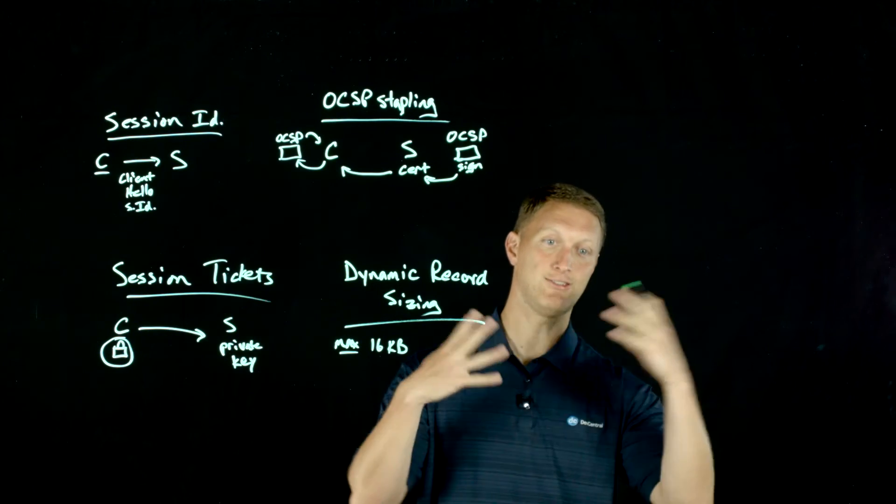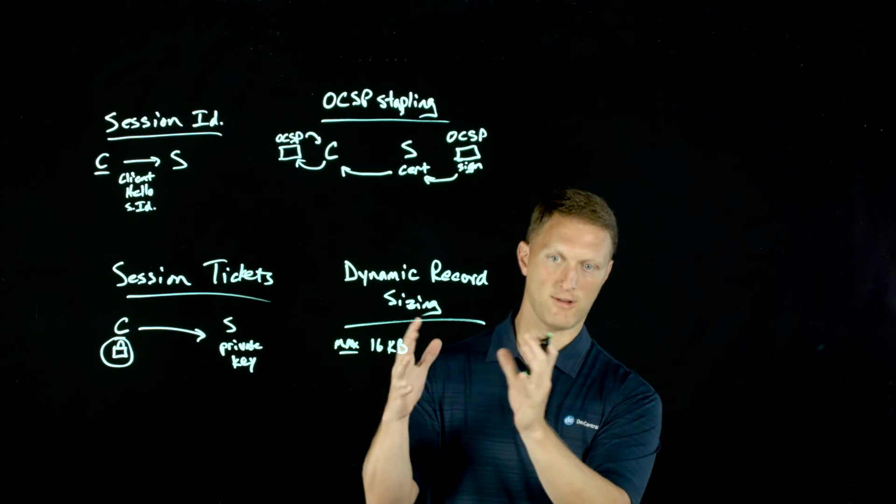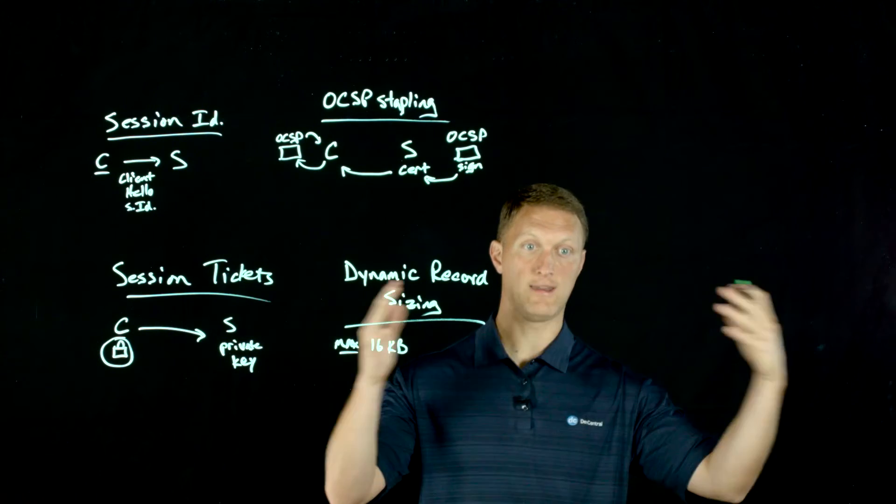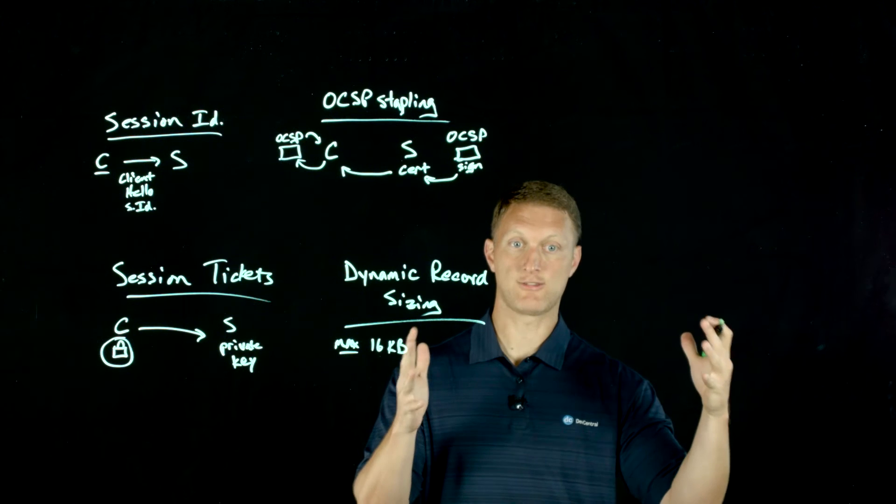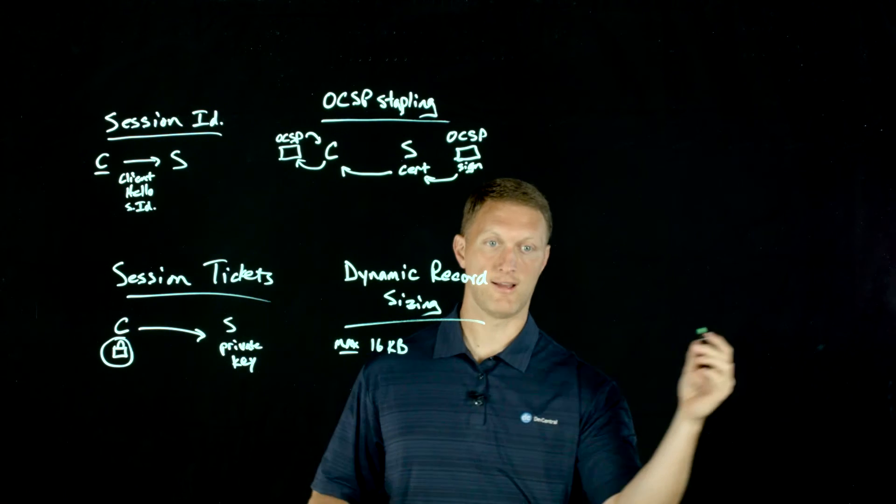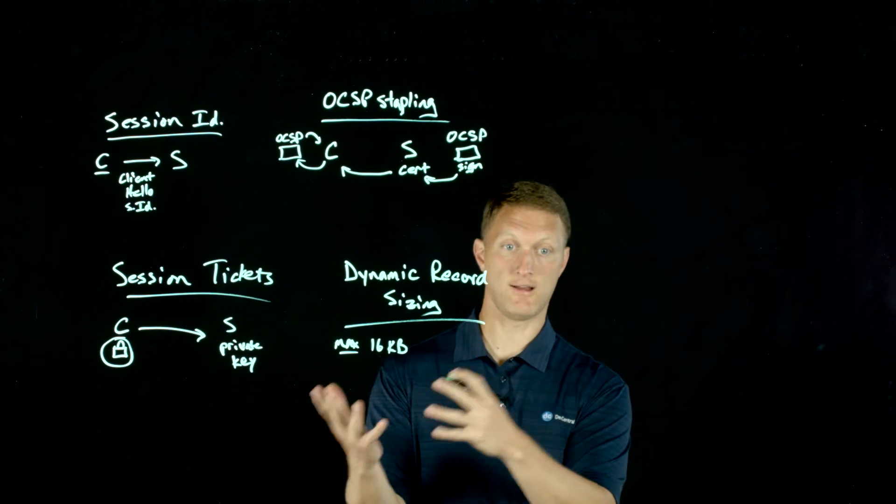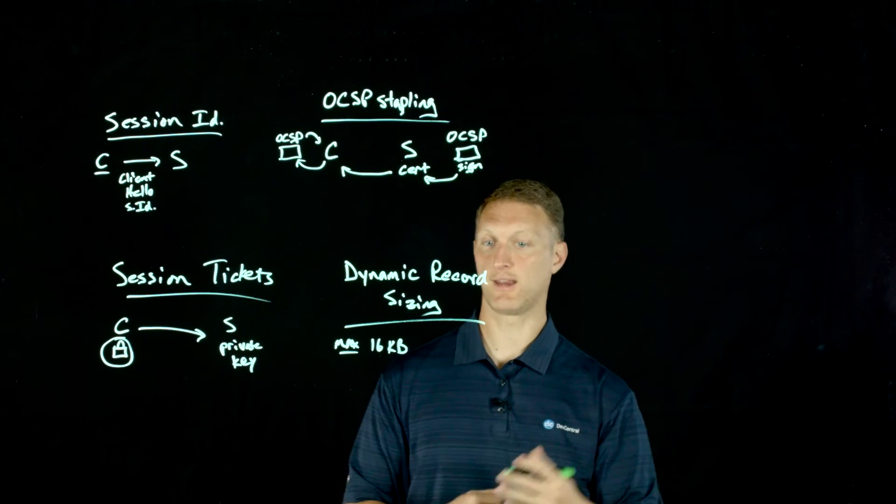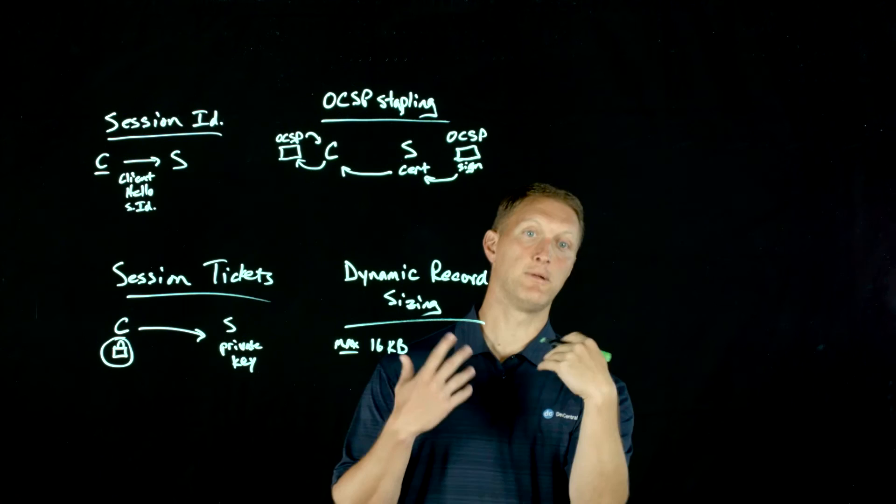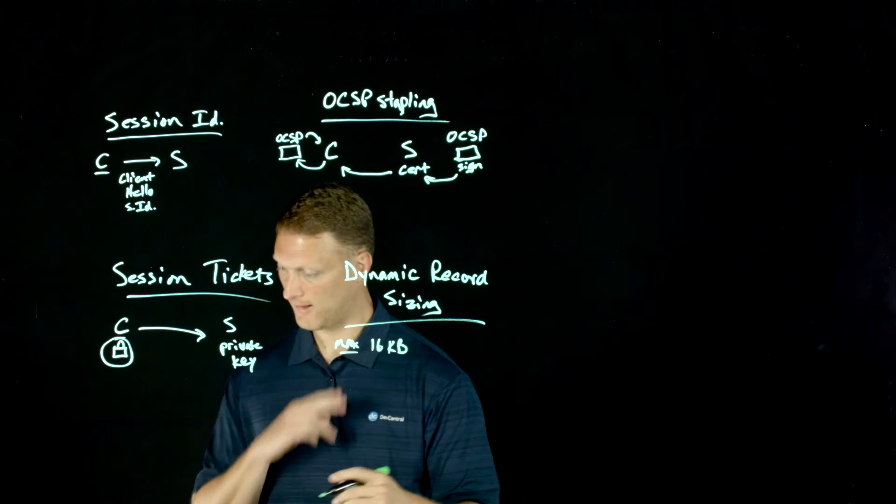But then as you get into, let's say you're going to stream Netflix, you're going to watch a big YouTube video, whatever. Once you've kind of established all the connection, now you're into the streaming experience, then you want to have a larger record size because you want to give more data during that streaming experience. And so what dynamic record sizing does is it allows you to change the size of the TLS record to change with the need of what you're doing with that whole communication between the client and the server. So again, this is an optional thing that you could do, dynamic record sizing, but if you do it, it will increase the speed, it'll increase the efficiency of what's going on with the TLS experience.